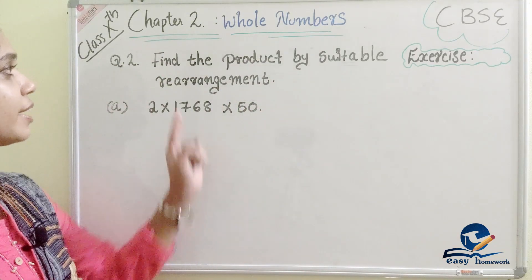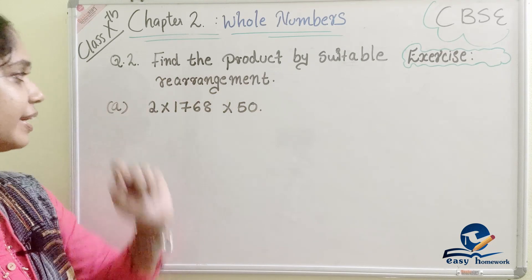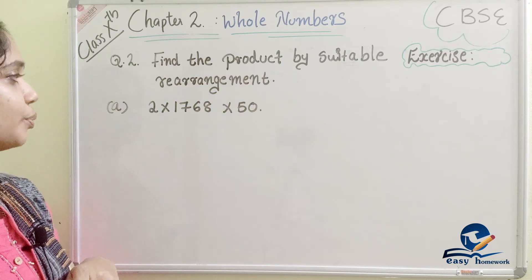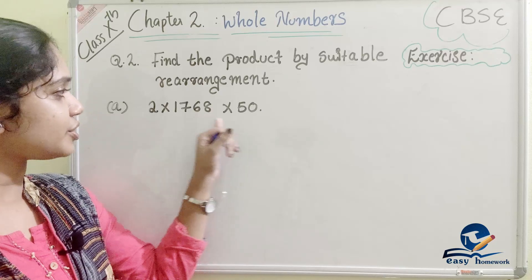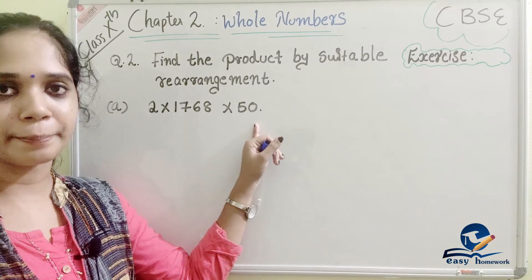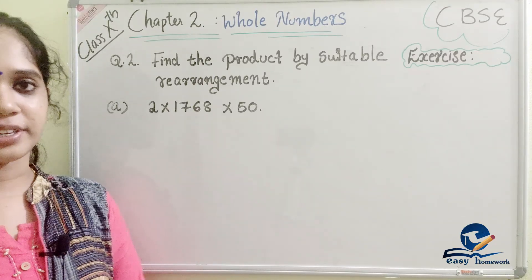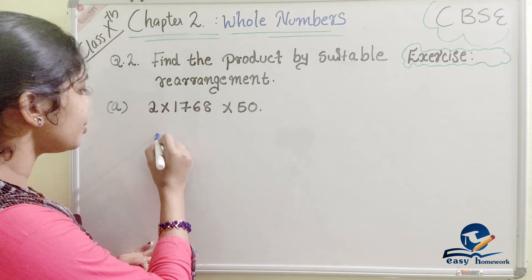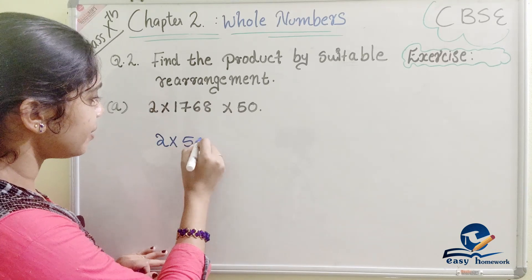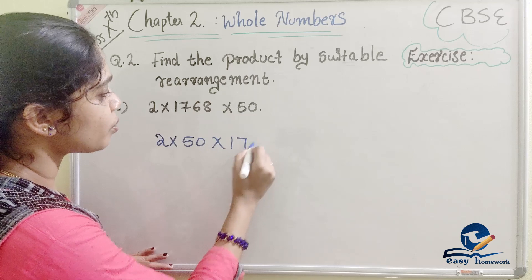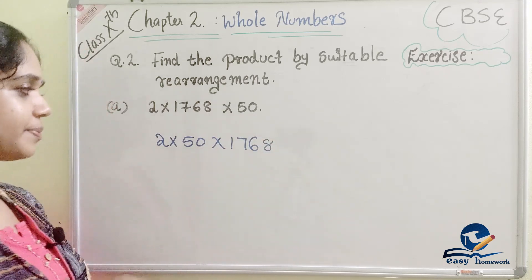First question: find the product by suitable rearrangement. 2 × 1768 × 50. We apply the commutative property and rearrange to: 2 × 50 × 1768.